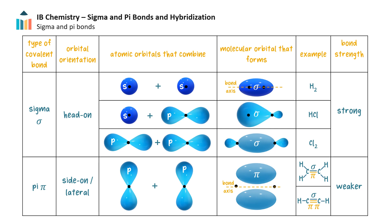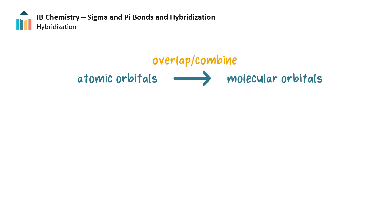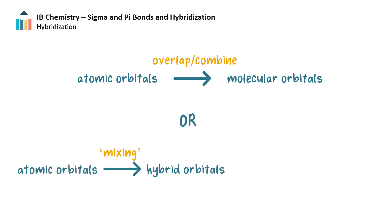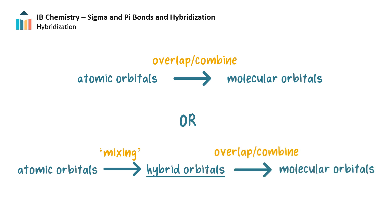And that is why alkenes and alkynes are more reactive than the corresponding alkanes. So far, we have seen how sigma and pi bonds form when atomic orbitals combine by overlapping to form molecular orbitals in covalent bonds. An alternative is for orbitals within an atom to first mix to form new hybrid atomic orbitals, which then overlap or combine to form sigma or pi bonds to other atoms.